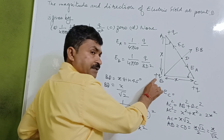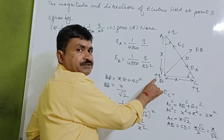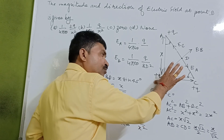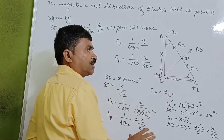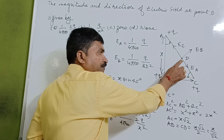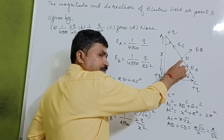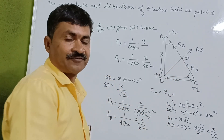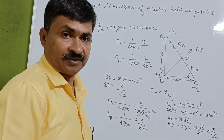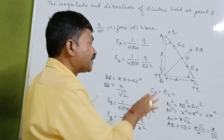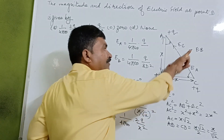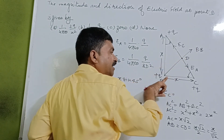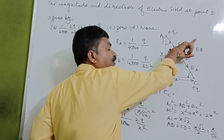B is also a positive charge. So if we consider this positive charge and put a unit positive charge to determine the electric field, there will be a force acting in this direction from B to D.